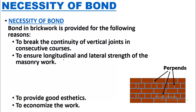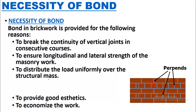The second reason is to ensure longitudinal and lateral strength of the masonry work. If joints come perpendicularly over each other in respective or alternate courses, the wall will be prone to cracking. Joints should be staggered as shown in the drawing, so that perpends do not align and the wall gains strength. Bond also distributes the load uniformly over the structural mass.